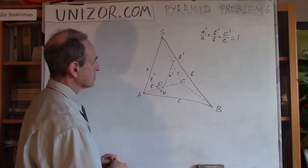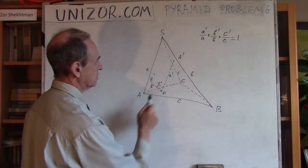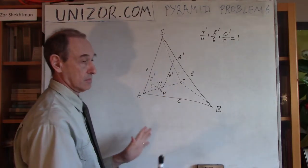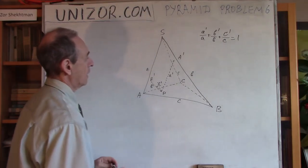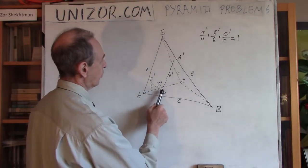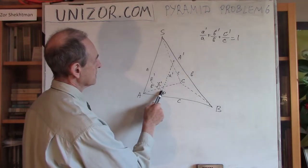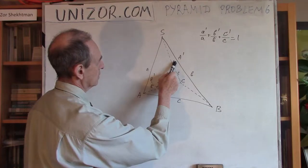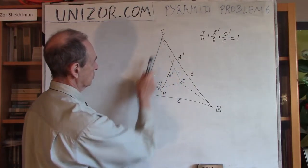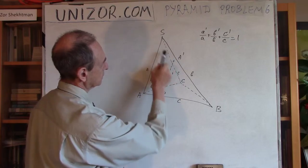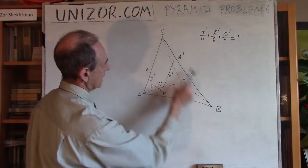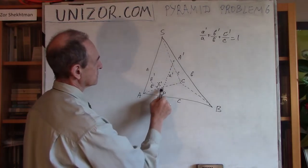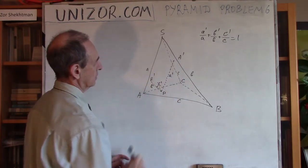Next, I choose any point P on the base within the triangle ABC. No restrictions, whatever the point is. From this point P, I draw lines parallel to side edges. PA prime would be parallel to SA. And it will hit the plane SBC somewhere at point A prime. And the length from P to A prime would be lowercase a prime.